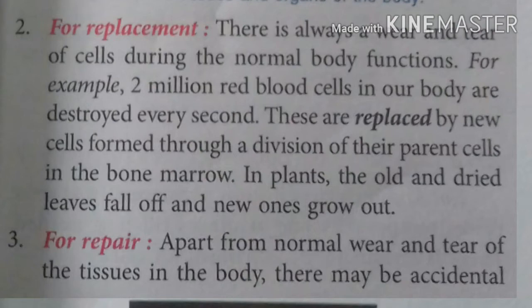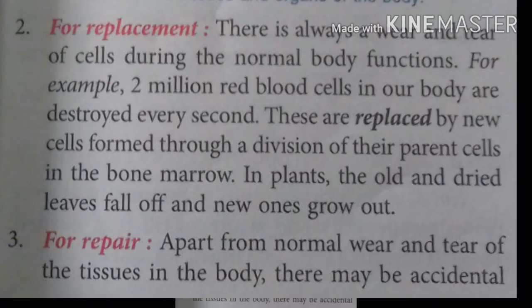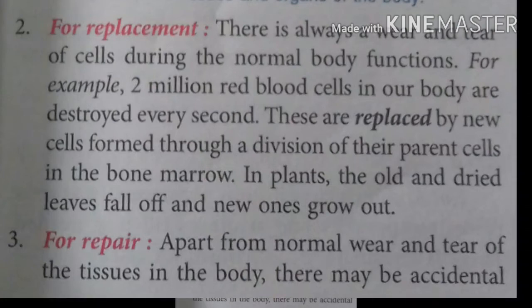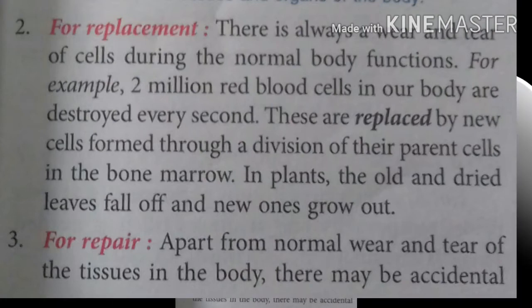The second need is for replacement. There is always wear and tear of cells during normal body function. For example, 2 million red blood cells (RBCs) in our body are destroyed every second. These are replaced by new cells formed through division of their parent cell in the bone marrow. In plants, old and dried leaves fall off and new ones grow out.